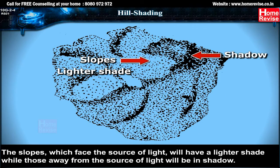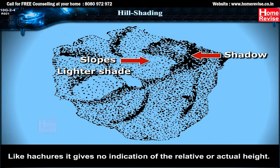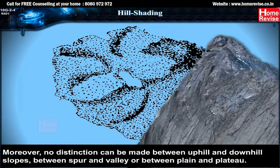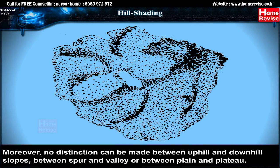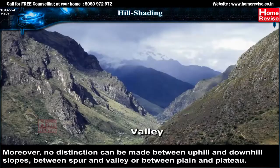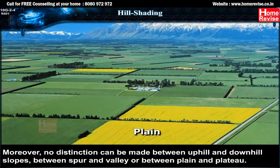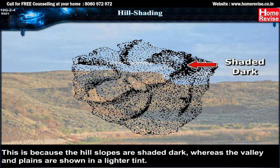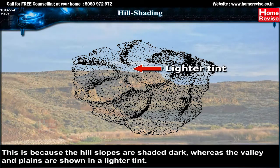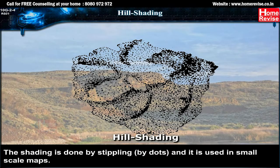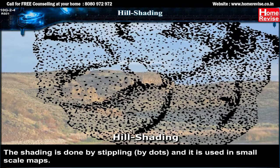The slopes which face the source of light will have a lighter shade, while those away from the source of light will be in shadow. Like hachures, hill shading gives no indication of relative or actual height. No distinction can be made between uphill and downhill slopes, between spur and valley, or between plain and plateau, because hill slopes are shaded dark while valleys and plains are shown in a lighter tint. The shading is done by stippling, that is by dots, and it is used in small-scale maps.